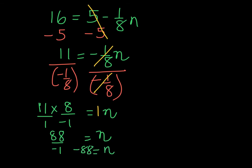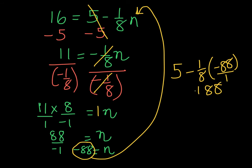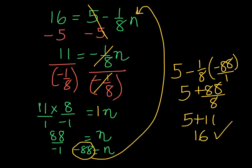At this point we can take our solution, substitute it into the original equation, and check. We have 5 and negative 1/8 times negative 88. In our numerator we get positive 88, and the denominator is 8, giving us 11. Adding to 5 we get 16. So we've solved it correctly.